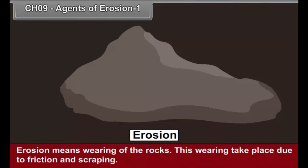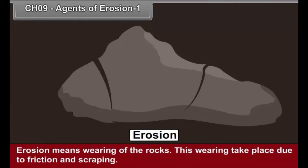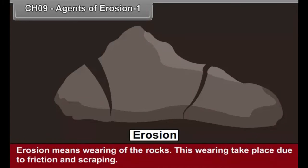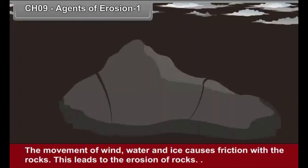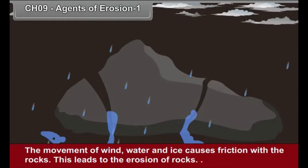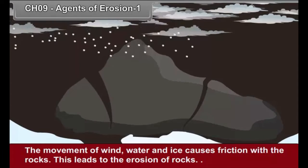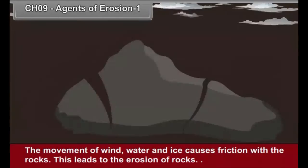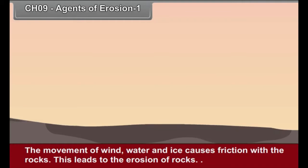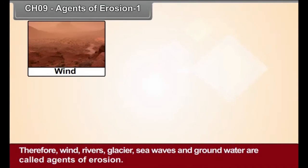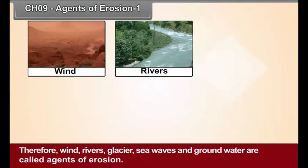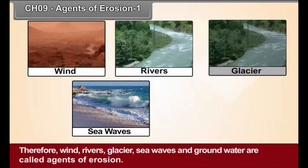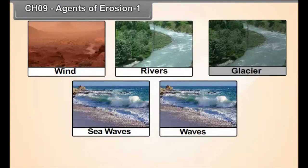Erosion means wearing of the rocks. This wearing takes place due to friction and scraping. The movement of wind, water and ice causes friction with the rocks, which leads to the erosion of rocks. Therefore, wind, rivers, glaciers, sea waves and ground water are called agents of erosion.